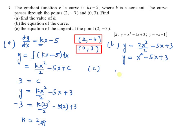Part c, you have to find the equation of the tangent at the point (2, -3). So to find the equation of the tangent, you need to find the gradient for tangent. So dy/dx is what? kx minus 5. k is what? k is 2, 2x minus 5. This is the dy/dx.